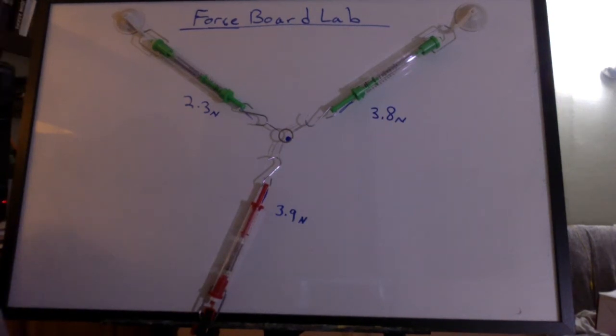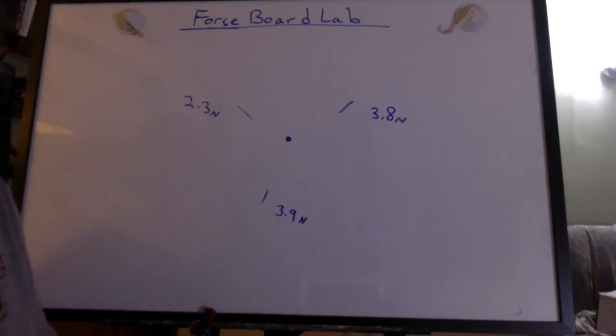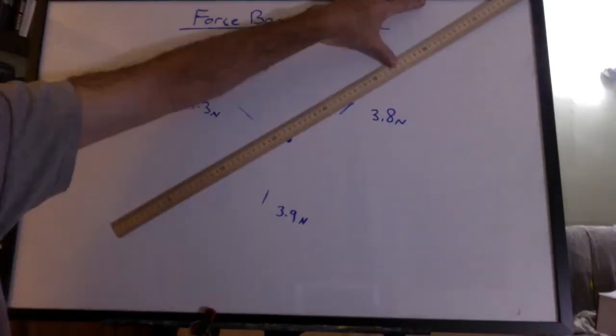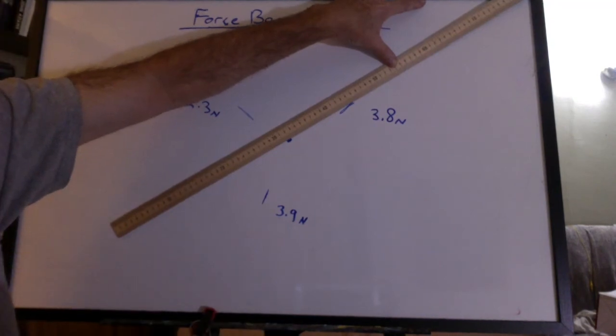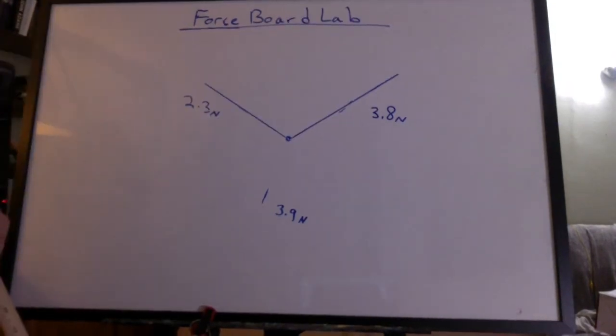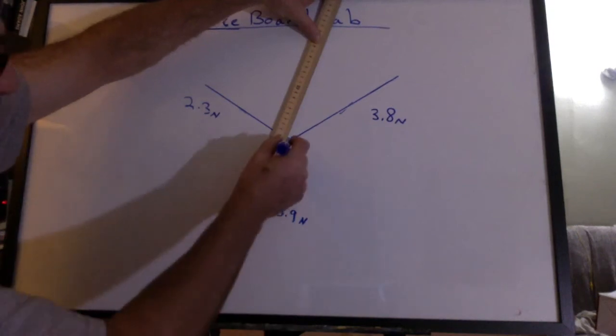Now we would take the paper out from underneath the spring scales, but in my case, I'll take the spring scales off the board. Now I'll use my meter stick to trace out the lines.